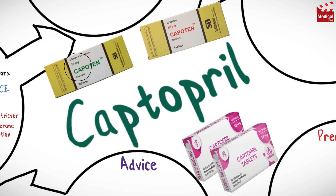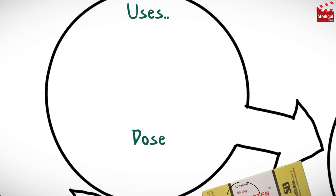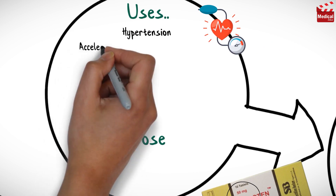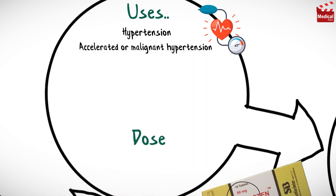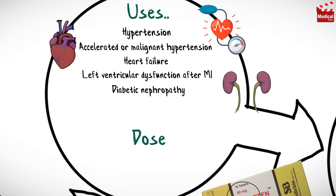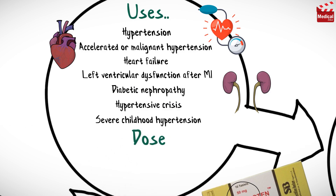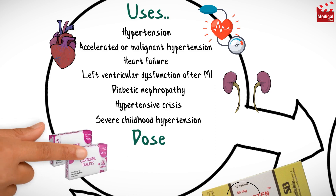Captopril is available as 25 and 50 milligram tablets. It is used in the management of hypertension, accelerated or malignant hypertension, heart failure, left ventricular dysfunction after myocardial infarction, diabetic nephropathy, hypertensive crisis, and severe childhood hypertension.